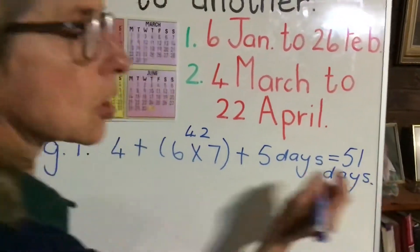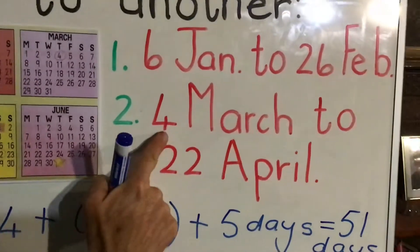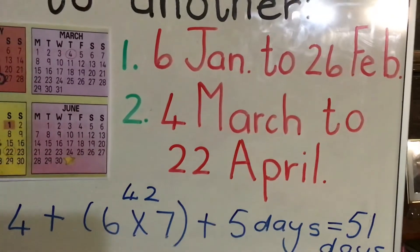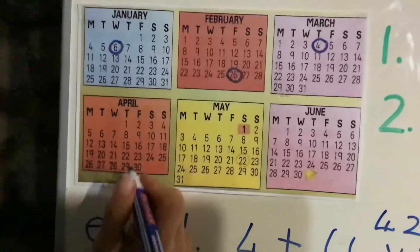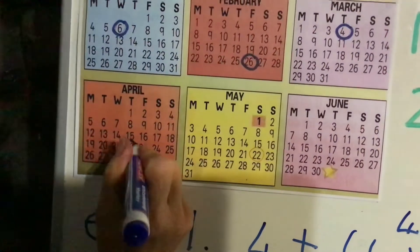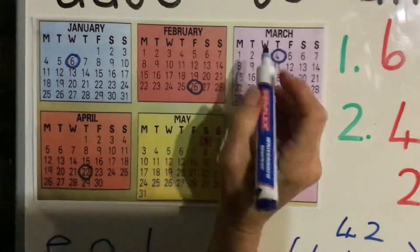Now let's do the second example in the same way as we did the first example. Number two: 4th of March to the 22nd of April. From the 4th of March to the 22nd of April. Here we go. Now let us, as we did last time, count how many days.